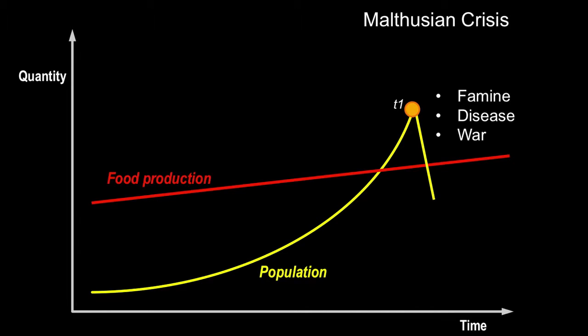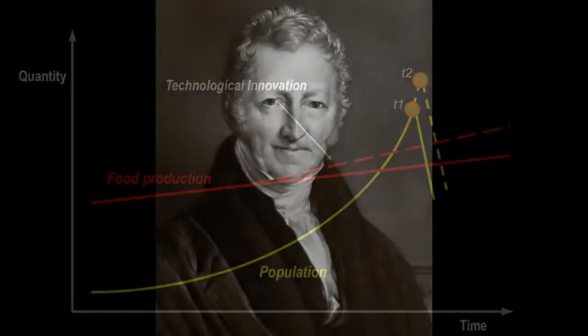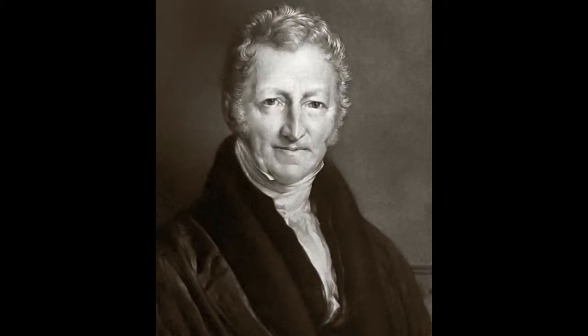However, Malthus recognized that technological development and better agricultural techniques could push up the ceiling of population and delay the point of crisis. But what goes up must come down, and inevitably population growth will outstrip technologically-driven food production and crash. Malthus's theory contradicted the optimistic belief prevailing in the early 19th century that a society's fertility would lead to economic progress.